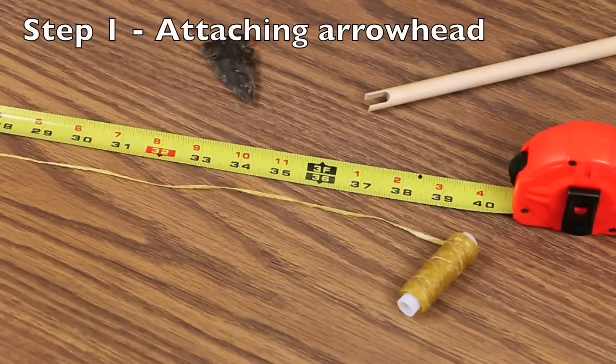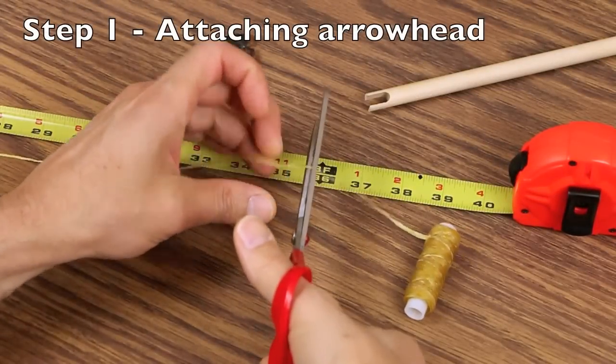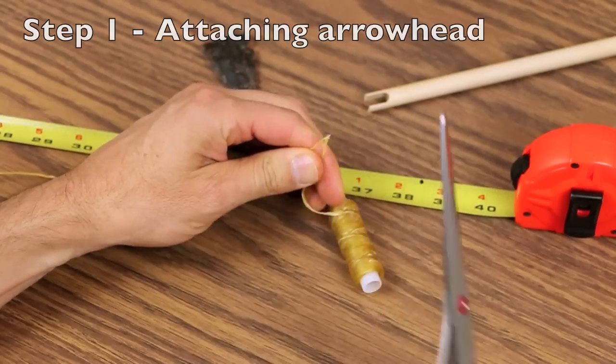The first step in creating the arrow is to attach the arrowhead. Cut 36 inches of the waxy yellow string, which is called sinew, and set the extra aside.